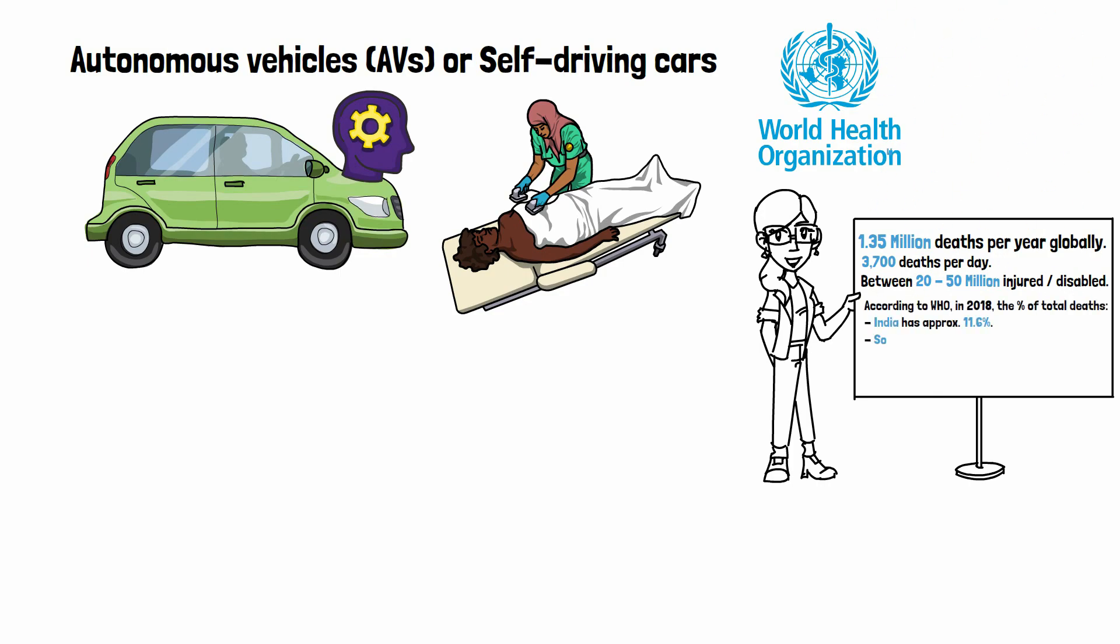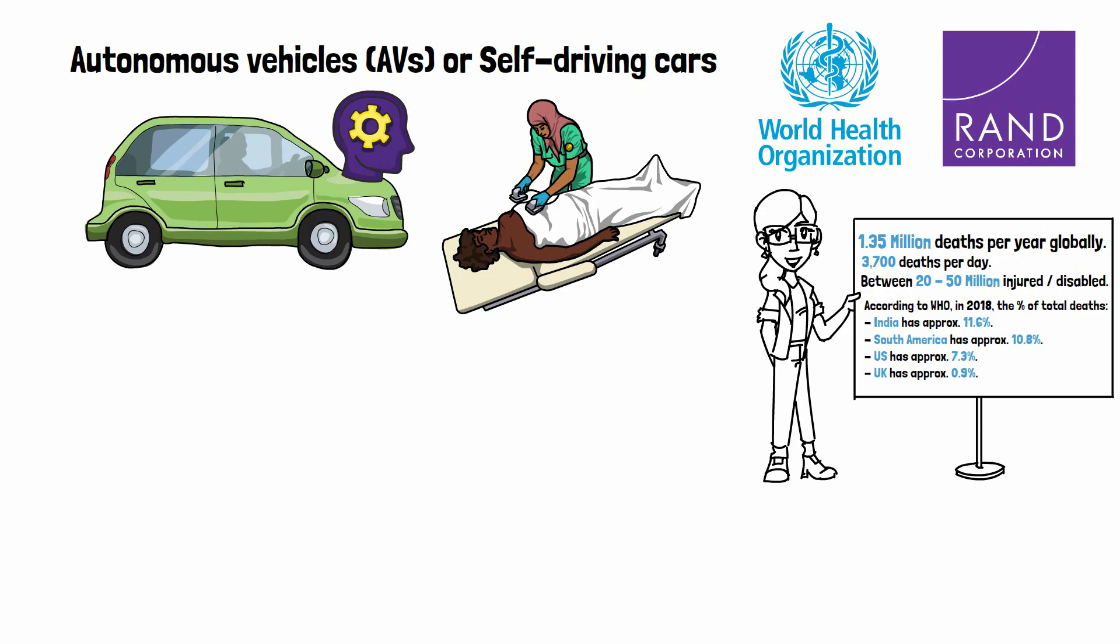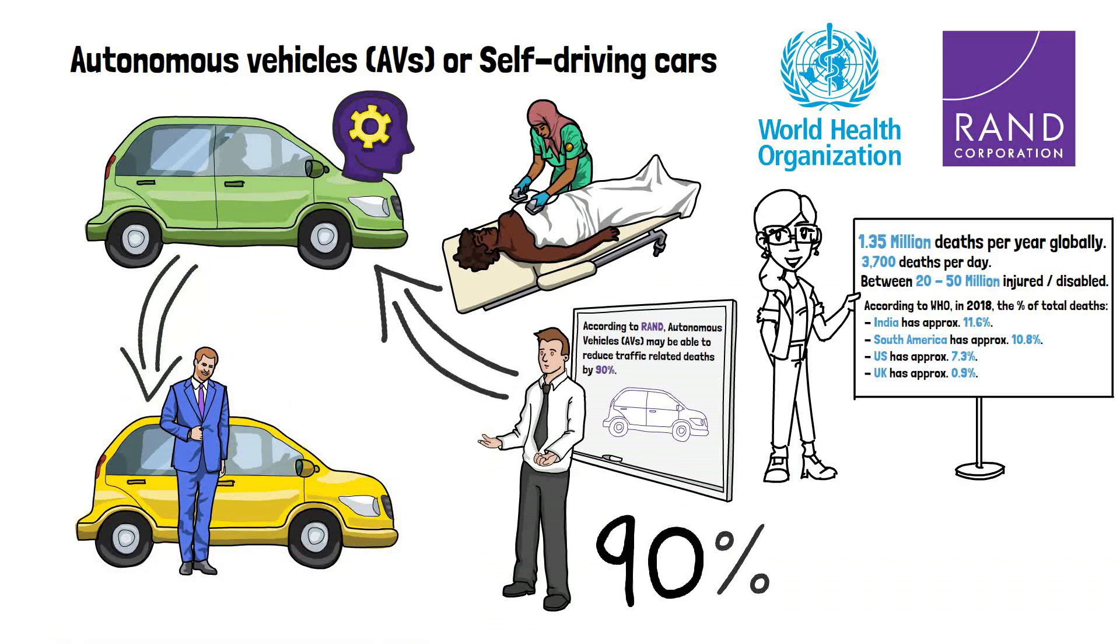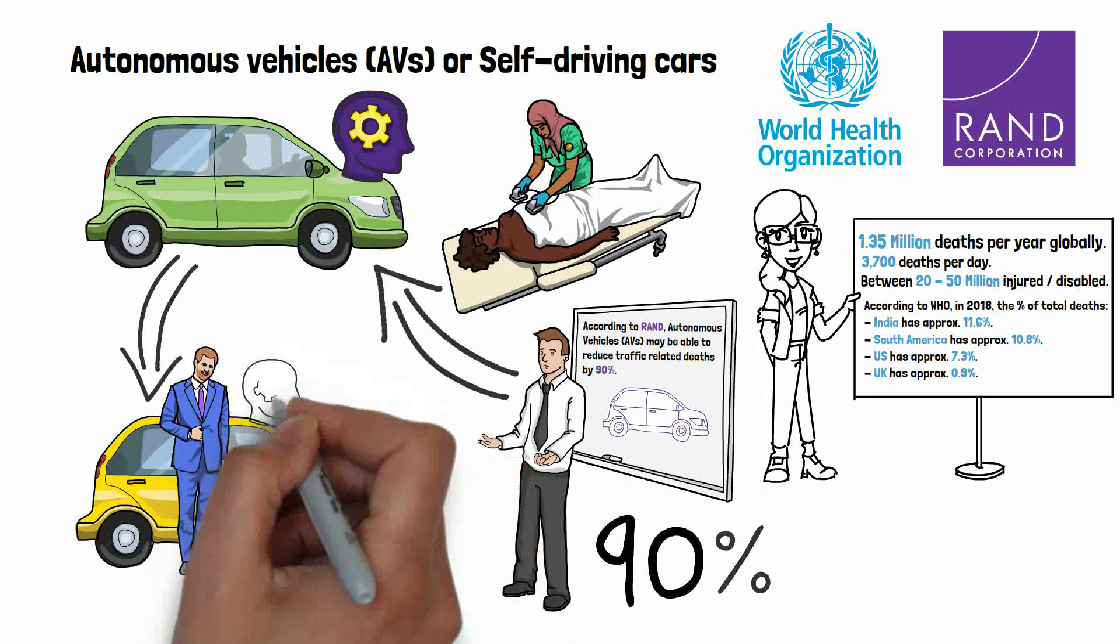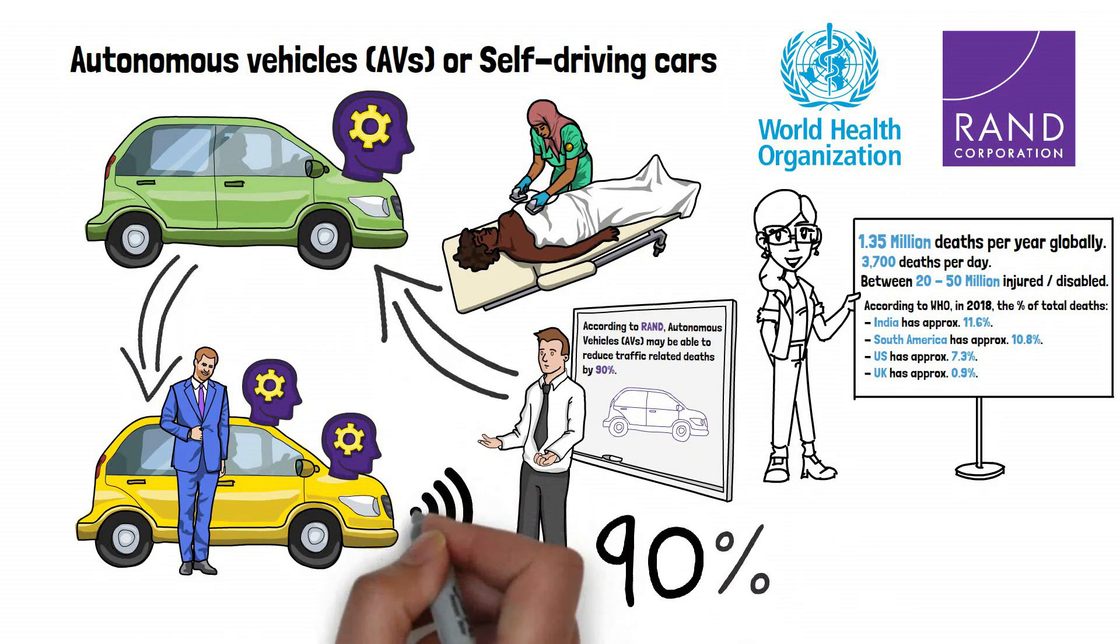The majority of these deaths and injuries occur in low- and middle-income countries, where road infrastructure and safety measures may be inadequate. According to a report by Rand Corporation, autonomous vehicles have the potential to reduce traffic fatalities by up to 90% compared to human-driven vehicles. This estimate is based on the assumption that autonomous vehicles will eventually be able to operate without any human intervention.